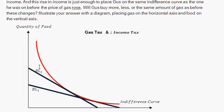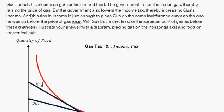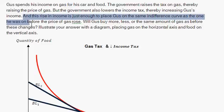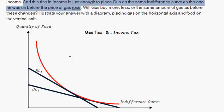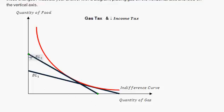And then the last tidbit was that the rise in income is just enough to place Gus on the same indifference curve as the one he was on before the prices rose. So that's why I chose this point here and not up here, not down here. It's because it said that the new point was going to be on the old indifference curve.